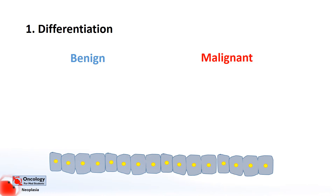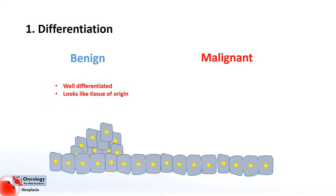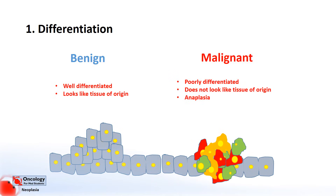In malignant neoplasms, however, cells are often not well differentiated or specialized and they don't look much like the tissue they came from. In practice, malignant tumors can range from well differentiated to poorly differentiated. In general, the more poorly differentiated the tumor is, the more aggressive it is. A complete lack of differentiation in cells is known as anaplasia, which means 'to form backward.'